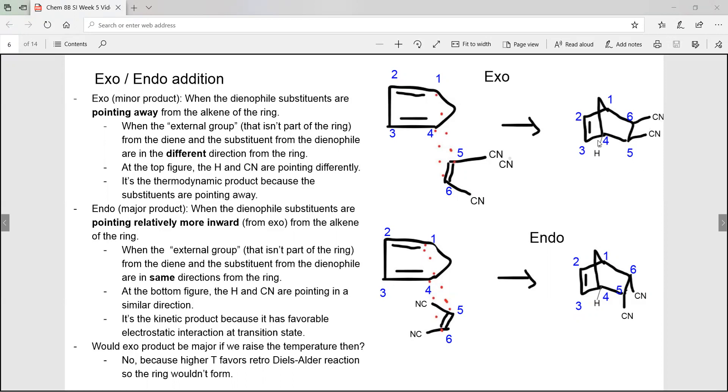So here we see the hydrogen and the cyanide are pointing differently, so this is exo. Exo is a thermodynamic product because it is more stable as the substituents are pointing away, kind of like equatorial in the cyclohexane.